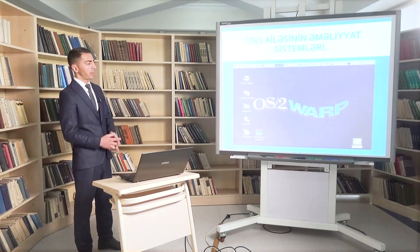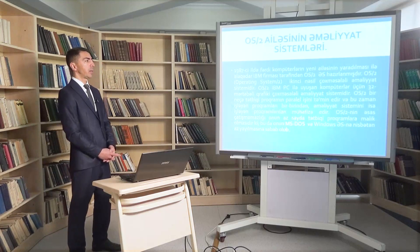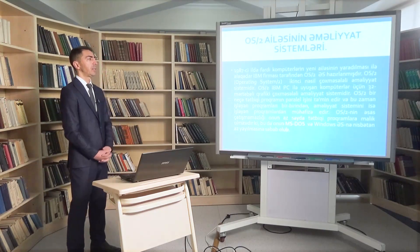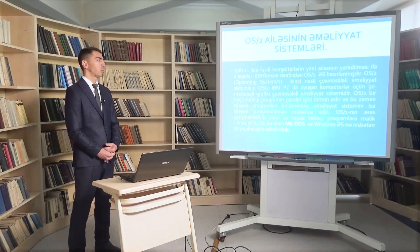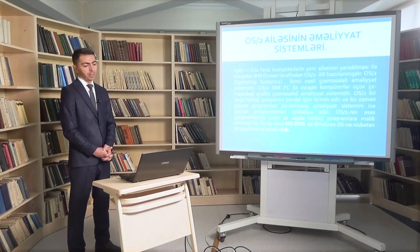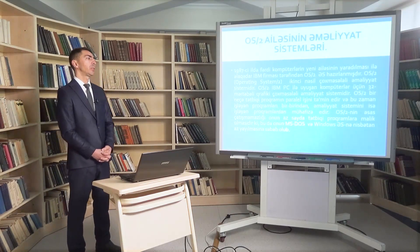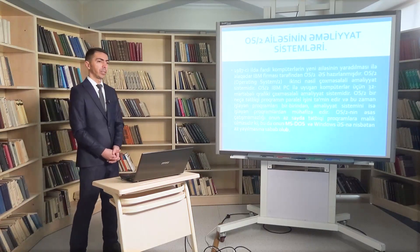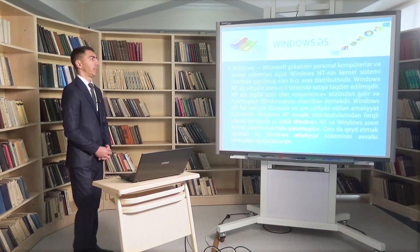OS/2 ailəsinin əməliyyat sistemlərinə nəzər salsaq, 1987-ci ildə fərdi kompüterlərin yeni ailəsinin yaradılması ilə əlaqədar olaraq IBM firması tərəfindən OS/2 - Operating System 2, yəni 2-ci nəsil çox məsələli əməliyyat sistemi yaradılmışdır. Bu IBM PC ilə uyuşan kompüterlər üçün 32 mərtəbəli qrafik çox məsələli əməliyyat sistemidir. Bir neçə tətbiq proqramının paralel işini təmin edir və onları bir-birindən, həmçinin əməliyyat sistemindən mühafizə edir. Əsas çatışmazlığı az sayda tətbiqi proqramlara malik olmasıdır.